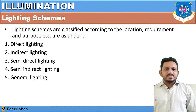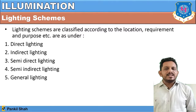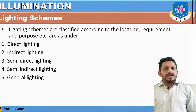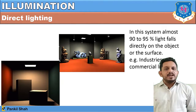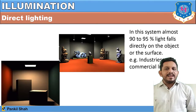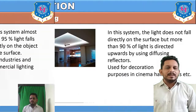Now let's discuss the different lighting schemes. Lighting schemes are classified according to location, requirement, and purpose: direct lighting, indirect lighting, semi-direct lighting, semi-indirect lighting, and general lighting. In direct lighting, 90 to 95 percent of the light falls directly on the object, as seen in the diagrams. This type is used in industrial and commercial lighting.